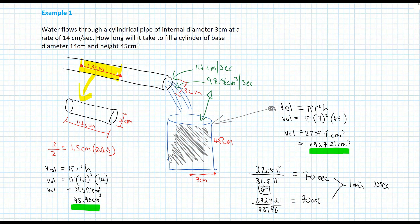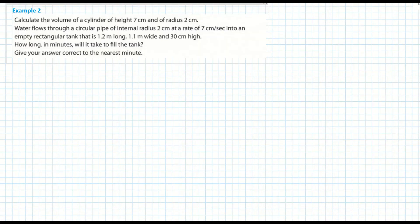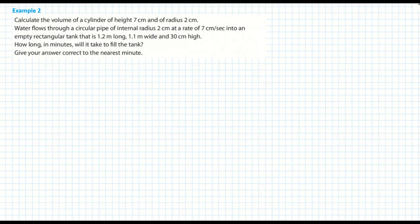We'll move on to example two. Part one: calculate the volume of a cylinder of height 7 centimetres and radius 2 centimetres. Part two: water flows through a cylindrical pipe of internal radius 2 centimetres at a rate of 7 centimetres per second into an empty rectangular tank that is 1.2 metres long, 1.2 metres wide, and 30 centimetres high. Find how long in minutes it takes to fill the tank. Be careful with units — we'll convert everything to centimetres.